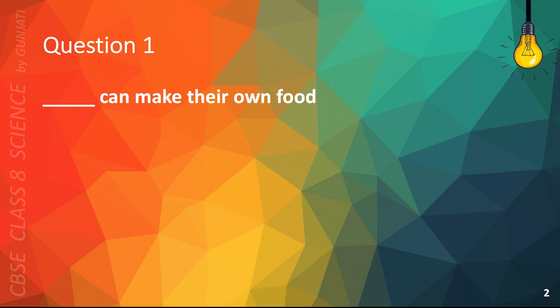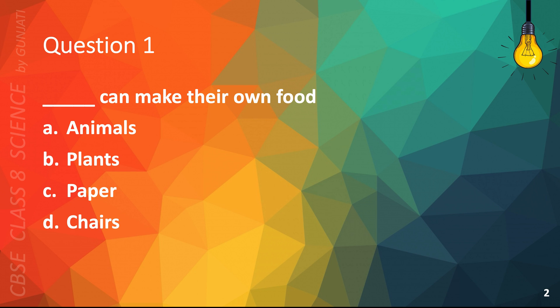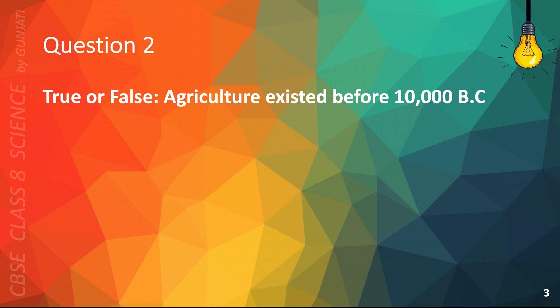Question 1. Blank can make their own food. A. Animals, B. Plants, C. Paper, or D. Chairs. The correct answer is B. Plants.